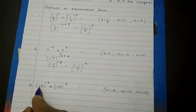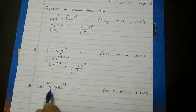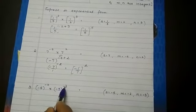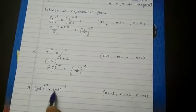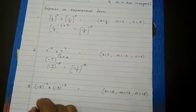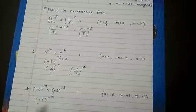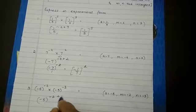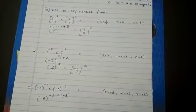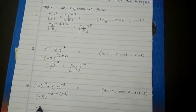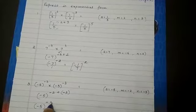Last sum, minus 5 raised to minus 2 into minus 5 raised to minus 3. Now here the base, that is a, is minus 5. So minus 5 raised to what is m plus n? Minus 2 plus what is n? Minus 3. So minus 5 raised to minus 2.